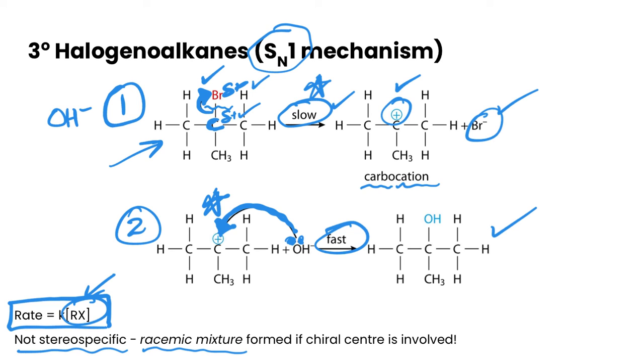And then step two, we need to show the lone pair of electrons on the nucleophile, the curly arrow attacking the carbocation, the fast, and then our final product. So there's quite a few sort of nuances to put in here. Not too bad, though, if you keep practicing it.